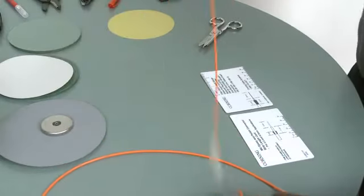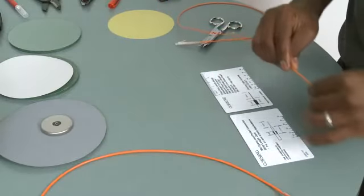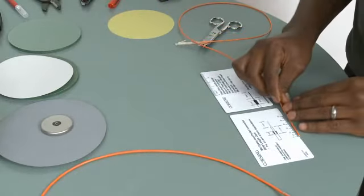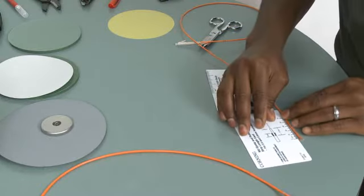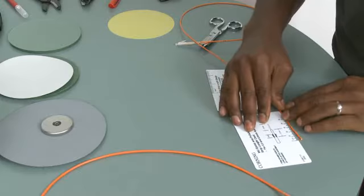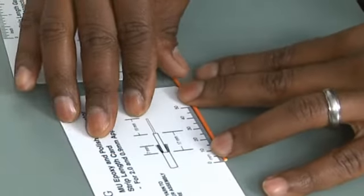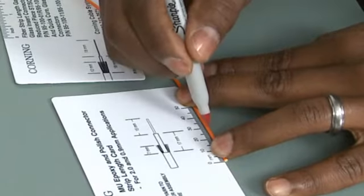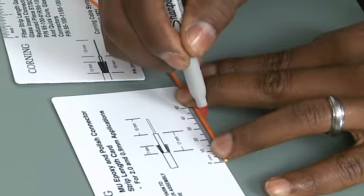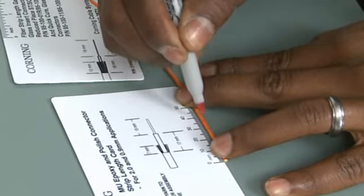After which I'm going to start with my 1.6 millimeter jacketed cable, and using the right card, because I'm going to be installing an LC connector on that end, I'm going to make two marks: one at the 28 millimeter mark, and one at the 35 millimeter point.